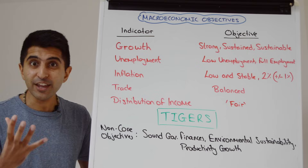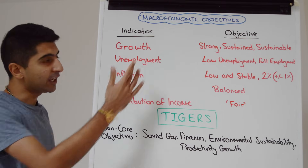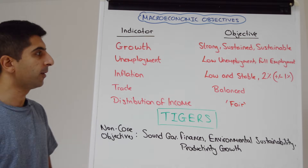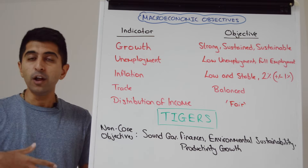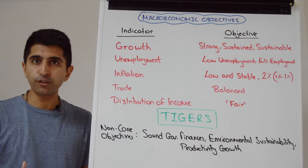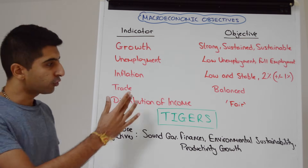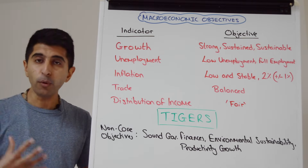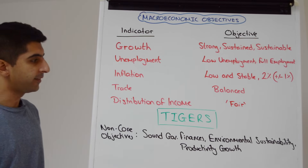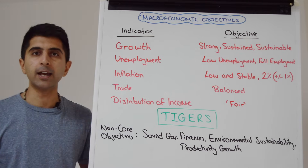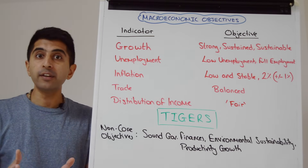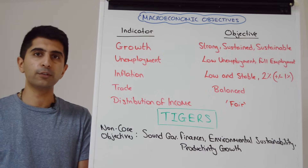Indicators that tell us how the economy is doing, such as economic growth, an indicator of incomes and living standards in the economy; unemployment, which tells us about those people in the economy that don't have jobs; inflation, the rate of growth of prices in an economy; trade, looking at the value of imports compared to exports; but also the distribution of income — not just whether incomes are rising, but how those incomes are distributed across households in the economy.